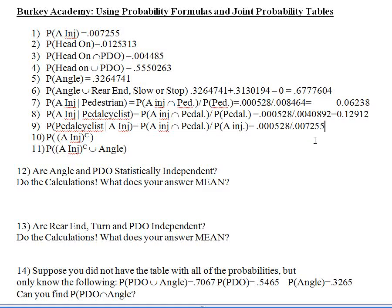Pause the video and calculate. The answer is about 7%, or 0.07. There's about a 7% chance that, given we know there's an A injury, a pedal cyclist was involved. Comparing: if we know a pedal cyclist was involved, there's a 13% chance of an A injury — but if we know there's an A injury, only a 7% chance a bicyclist was involved.